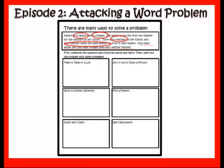Let's say we decided to make a table or a list. I can list out the facts I know: I've got 20 apples, 25 oranges — put that together, that's 45 pieces of fruit — and I've got 9 teachers. Now I can start to look at maybe I need to do some division. I can also organize that same information in a table format. I can make myself a number sentence: 20 apples plus 25 oranges equals n, some number — that's my total number of fruit. Then n divided by 9, which is my number of teachers, gives me my answer of how much fruit each teacher gets in their basket.